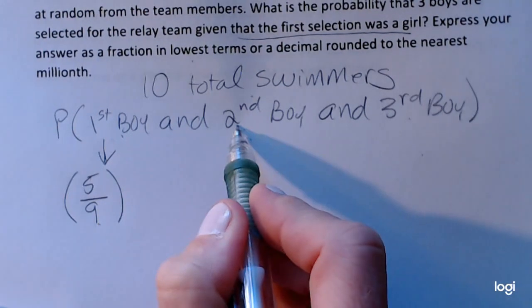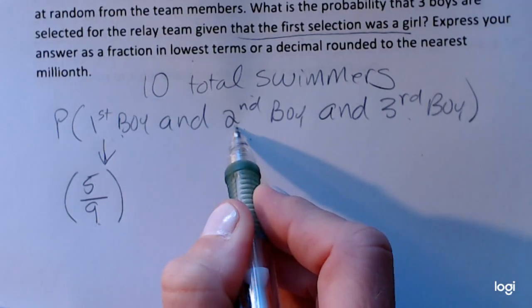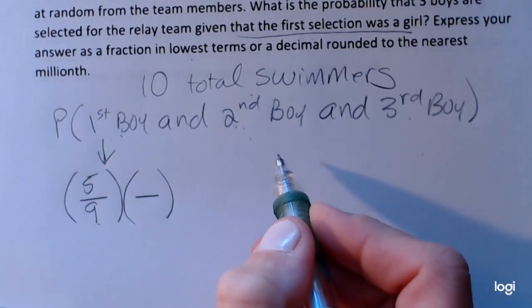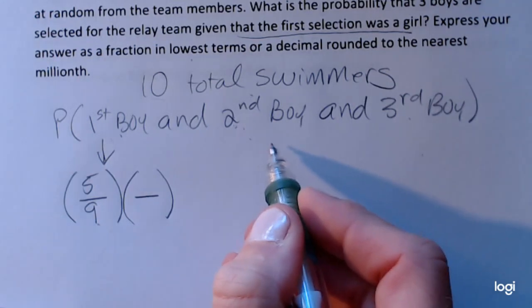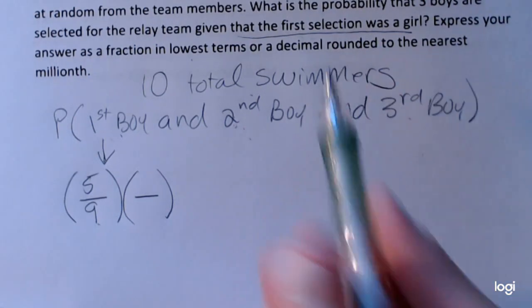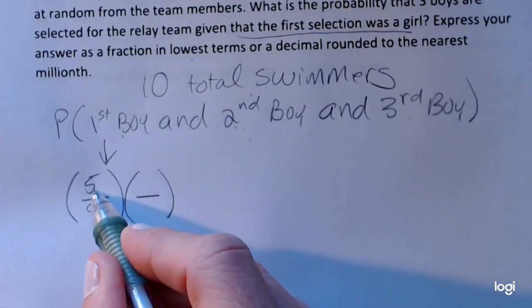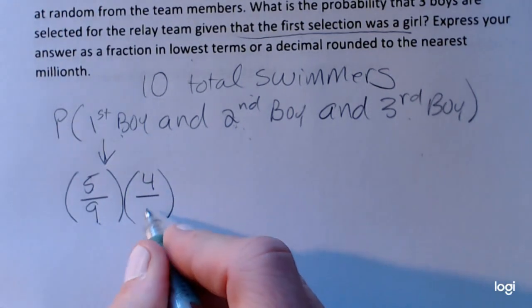Now I need to find the probability that the next selection is a boy. And this is also a conditional probability. It's the probability that this selection is a boy given that we've already selected a boy and a girl. So the probability we get another boy here given that this one was a boy is going to be four out of eight.